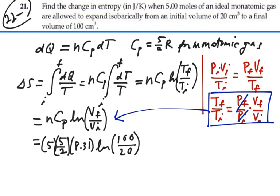And what does this give us? I get 167.18, we'll say 167.2 joules per kelvin. So that is the entropy change when five moles of an ideal monatomic gas are allowed to expand isobarically to five times its initial volume, 167.2 joules per kelvin.